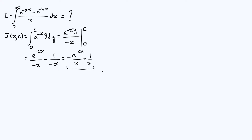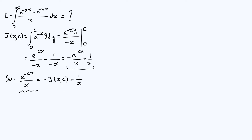Rearranging that equation, we deduce that e^{-cx}/x = -J(x,c) + 1/x. The reason for doing this is that the term e^{-cx}/x looks very much like the individual parts of the integrand of I — specifically e^{-ax}/x and e^{-bx}/x. So now that we've written this part of the integrand of I in terms of J, let's use that relationship to rewrite I.